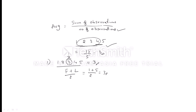Let me give one more example. Consider 72, 73, 74, 75, and 76. Can you guess the average? Observe that these are in consecutive order, so average is the middle number, which is 74. So 74 will be the average.